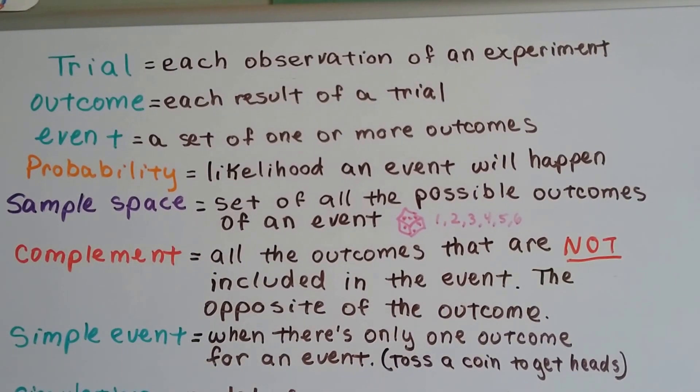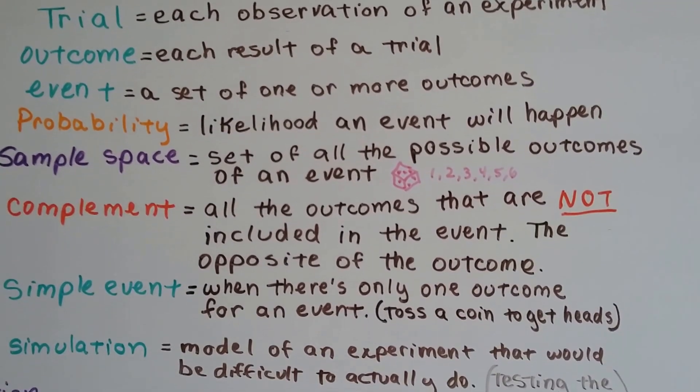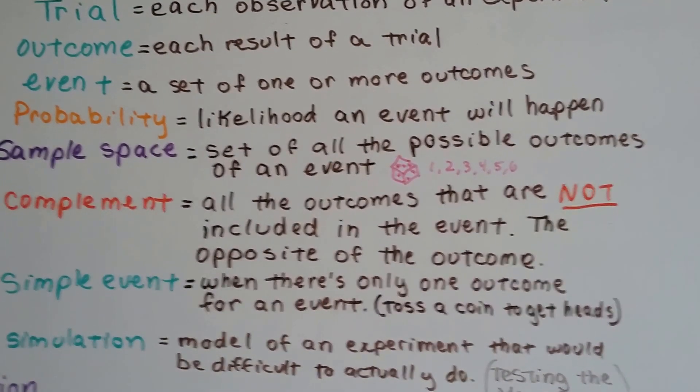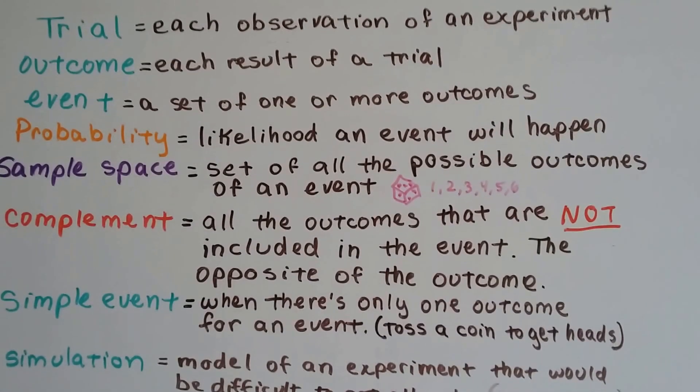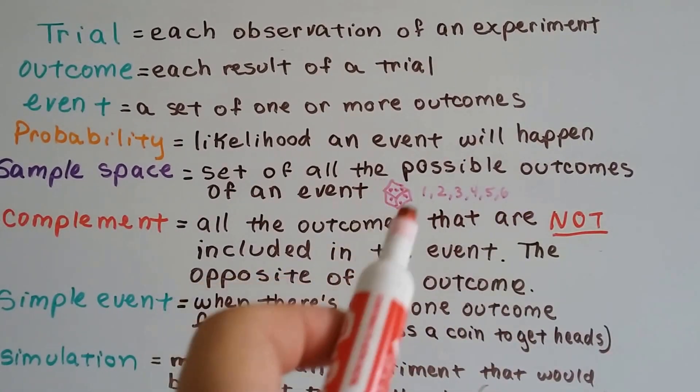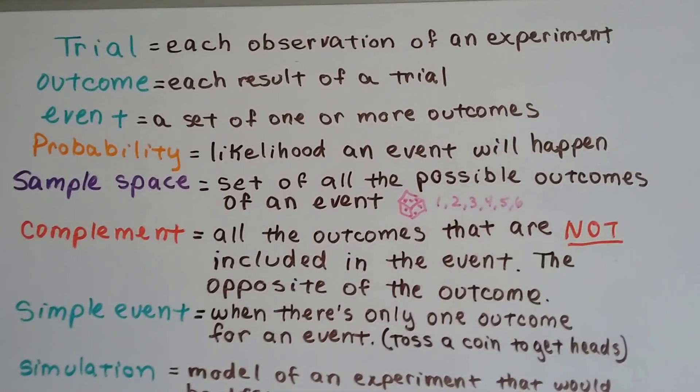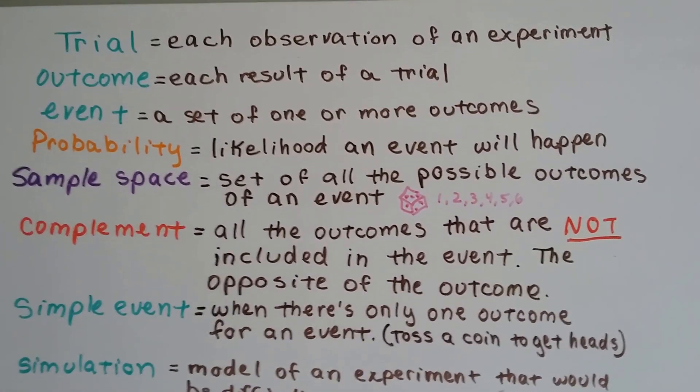Probability would be the likelihood an event will happen. And the sample space would be the set of all the possible outcomes of an event. So if you rolled a die, the sample space would be 1, 2, 3, 4, 5, 6, because those would be the choices of what would come up on that die. Or on a coin it would be heads or tails. That would be the sample space.